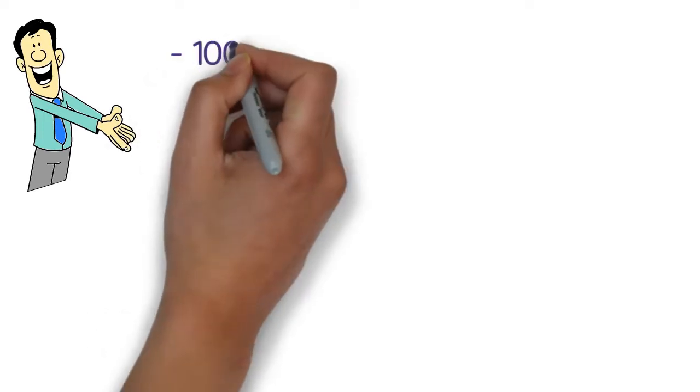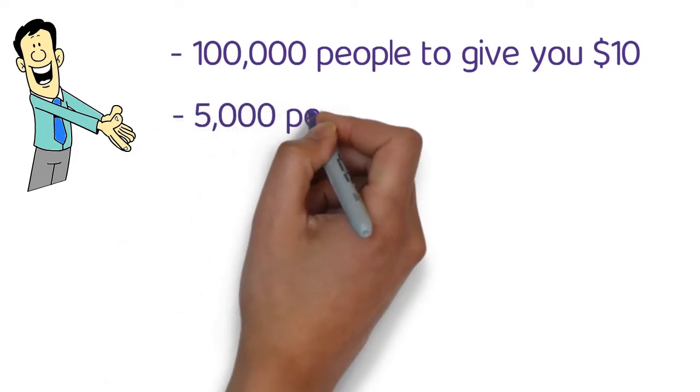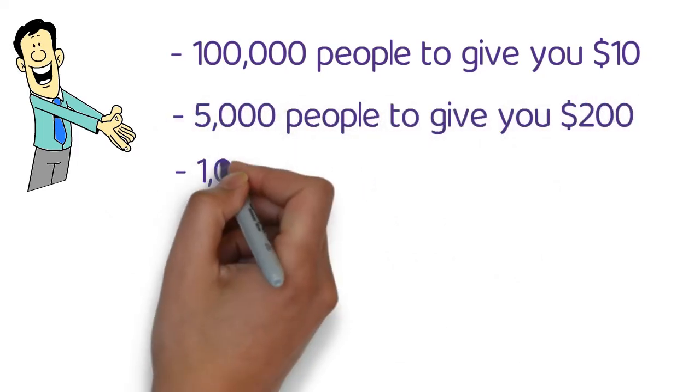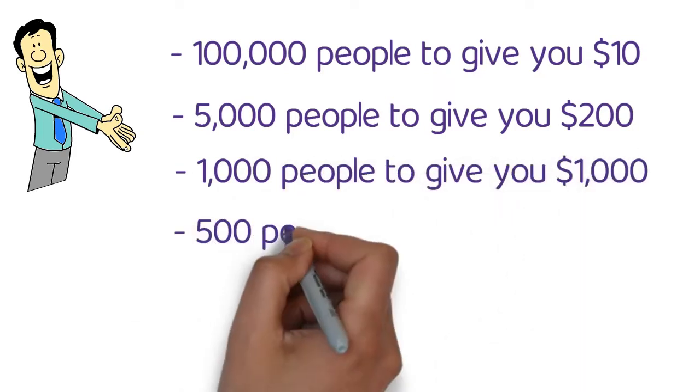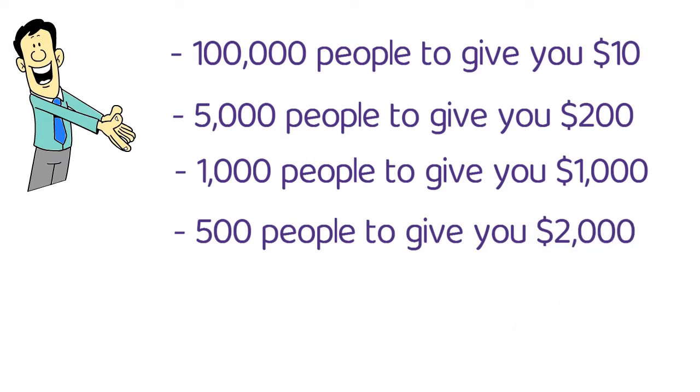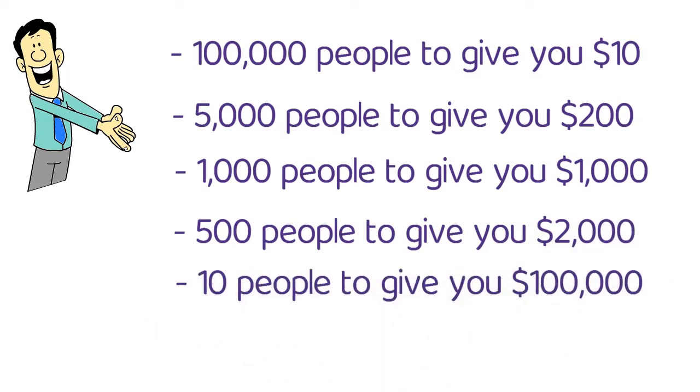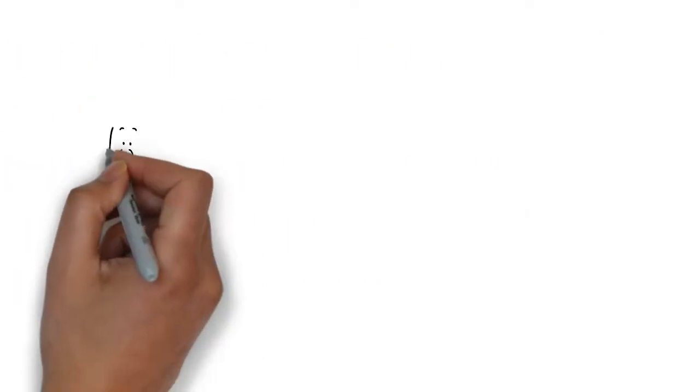You could get 100,000 people to give you $10 for your product or service. Or you could get 5,000 people to give you $200, 1,000 people to give you $1,000, 500 people to give you $2,000, 10 people to give you $100,000, or 5 people to give you $200,000 for your product or service.